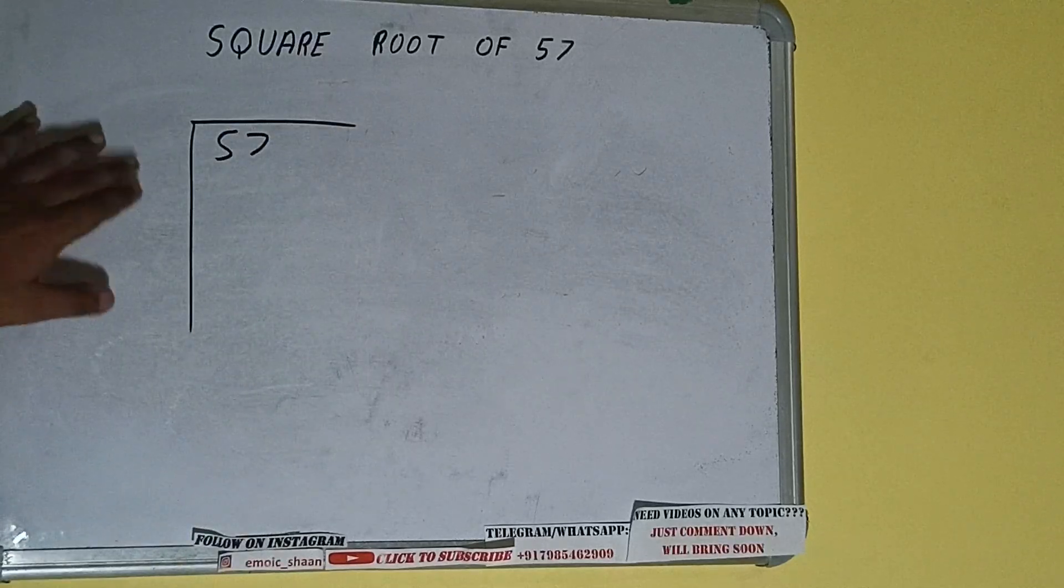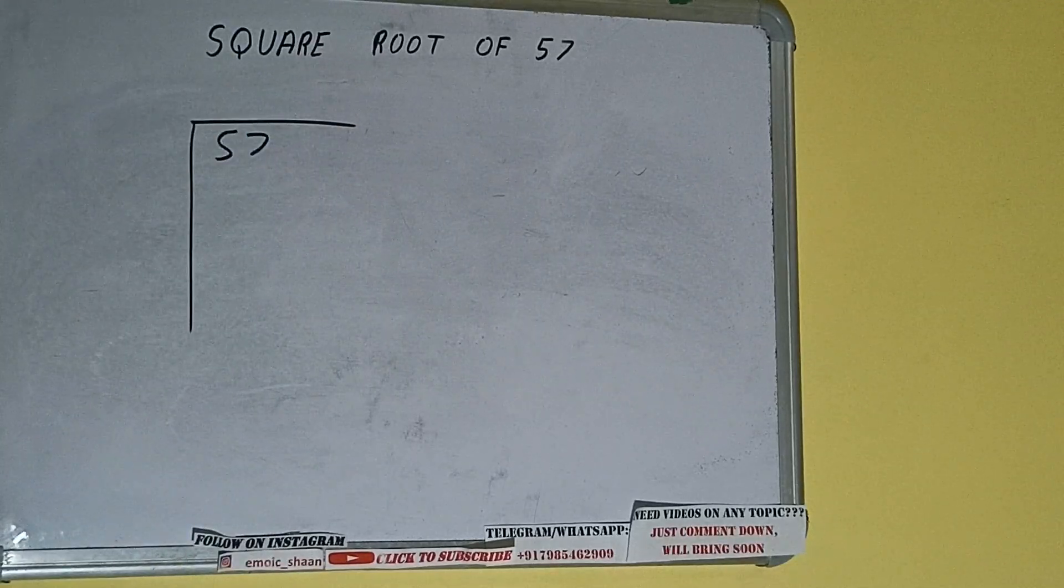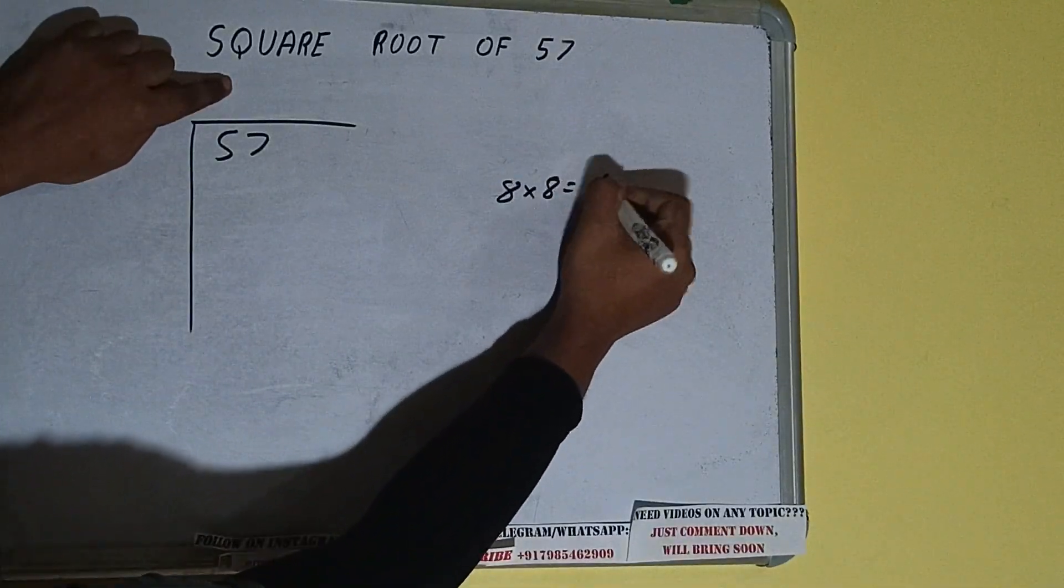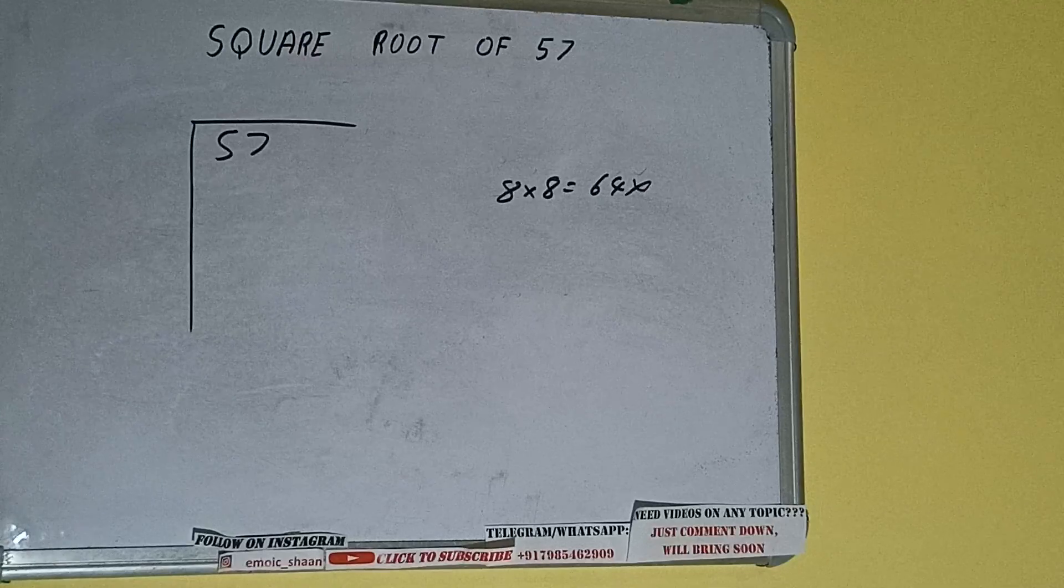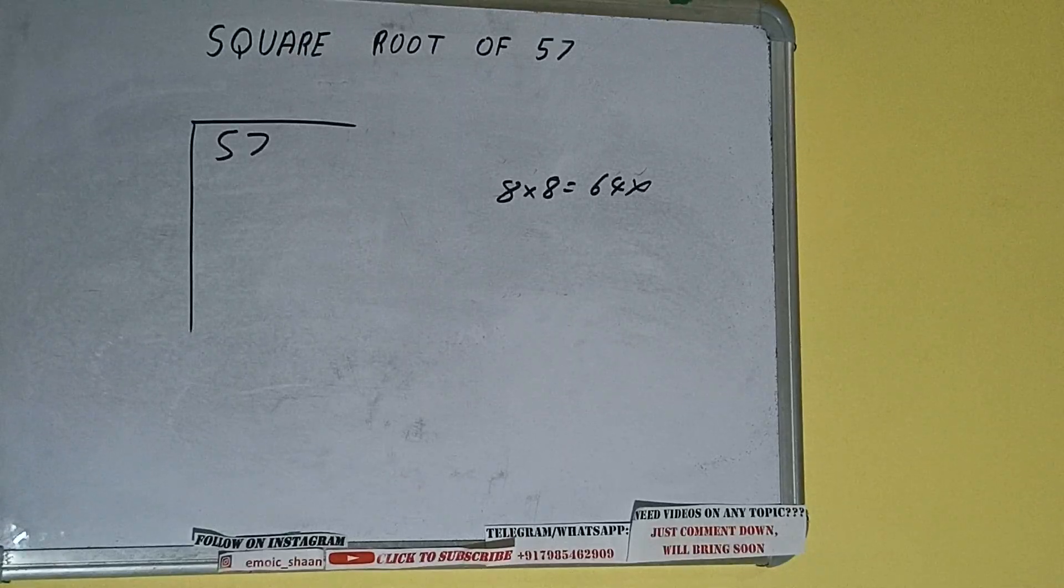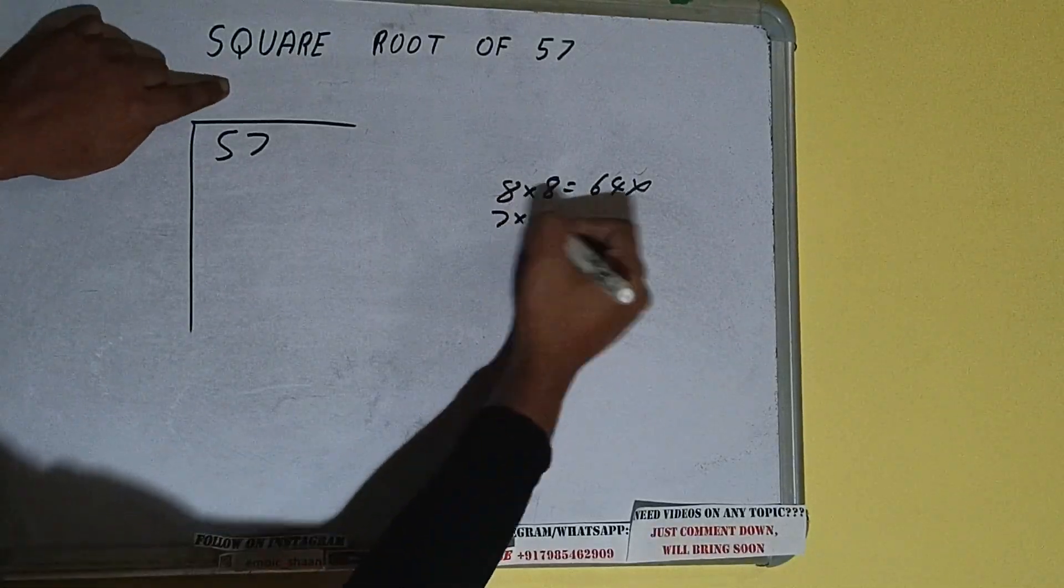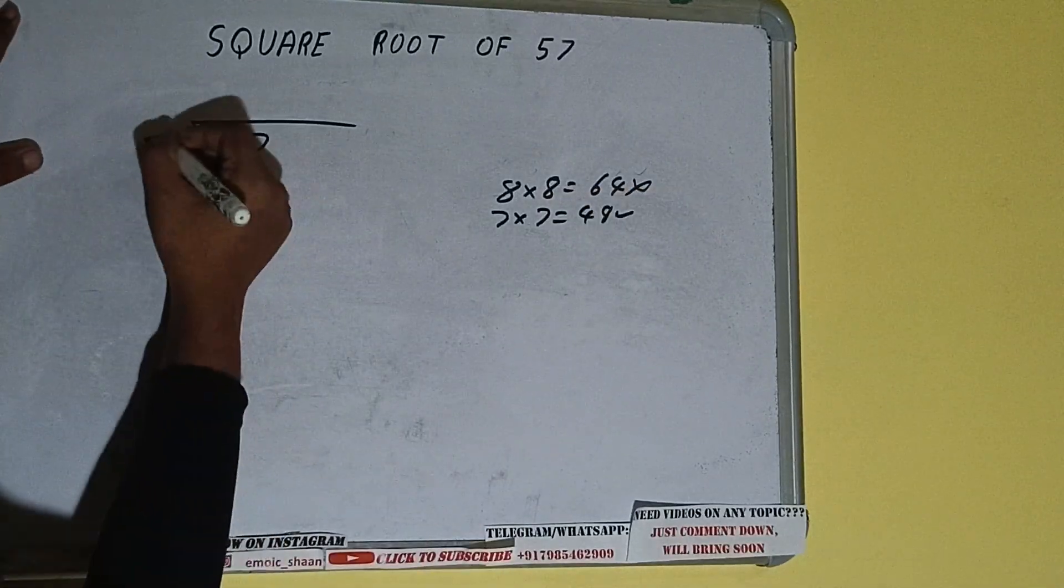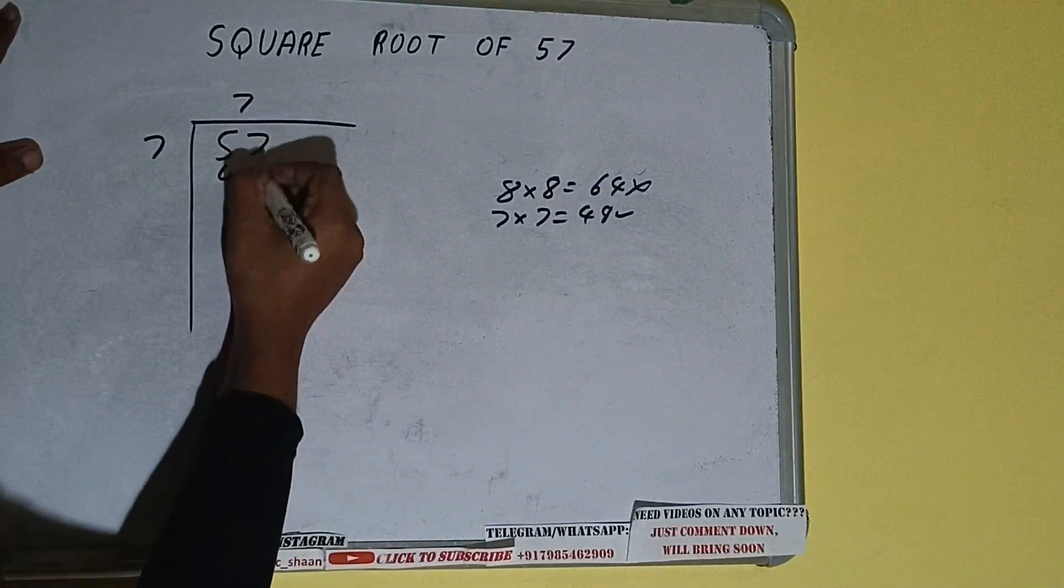Whatever number we write here, we have to write here also. So if we write 8 here and 8 here it will be 64, which is greater than 57, so we cannot take it. If we write 7 here and 7 here it will be 49, which is good to take. So 7 here and 7 here, 49, subtract and 8 will be left.